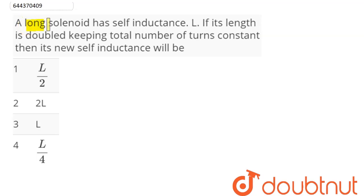Question is, a long solenoid has self-inductance L. If its length is doubled, keeping the total number of turns constant, then its new self-inductance will be.